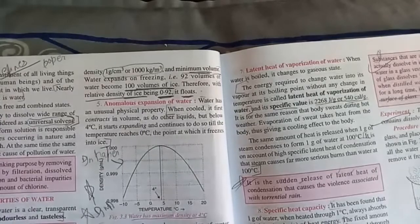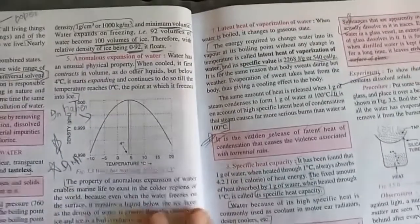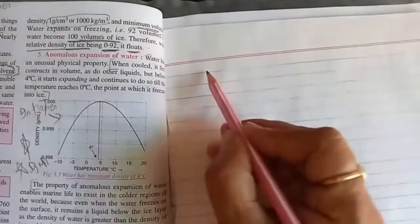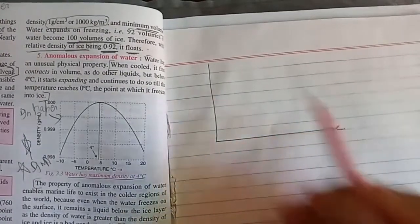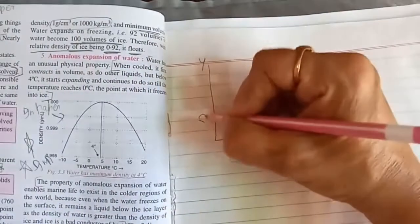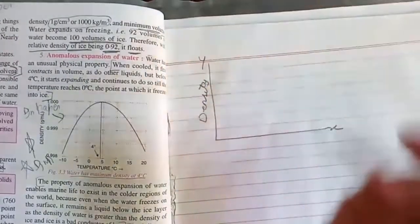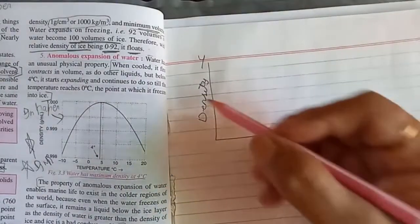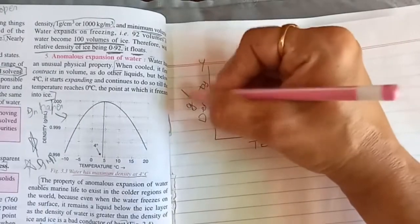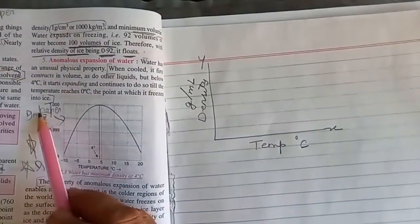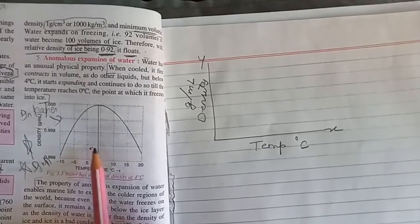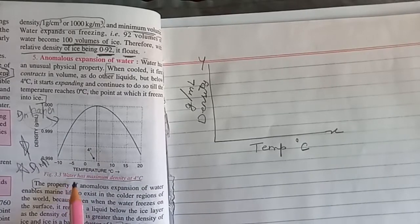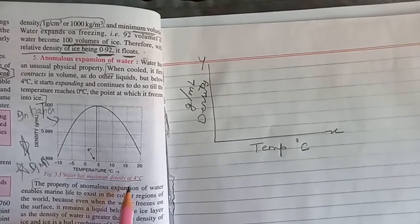At four degrees Celsius, water shows a peculiar behavior which is known as anomalous expansion of water. Look at this graph. In this graph, Y-axis represents density and X-axis represents temperature in degrees Celsius. Y-axis is density in grams per milliliter. You will draw this graph in your notebook and practice it. This is very important.